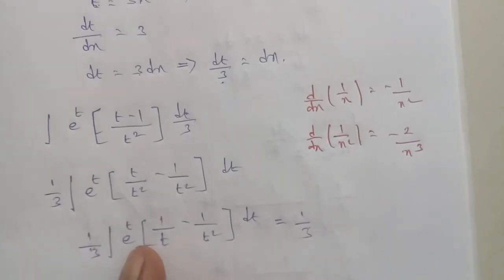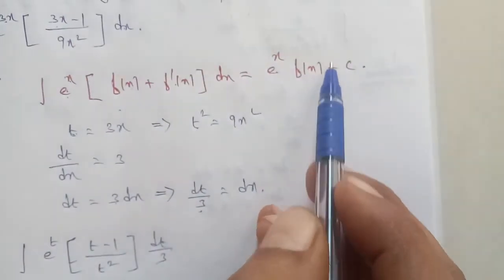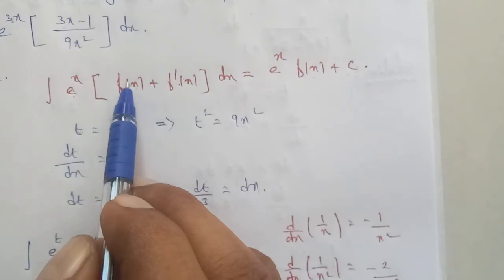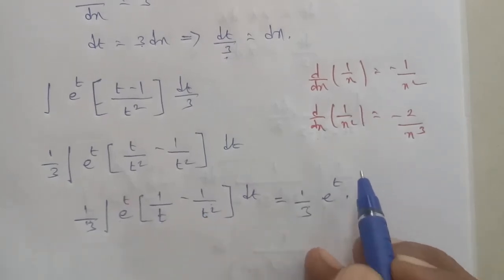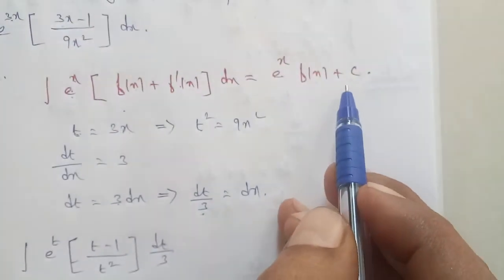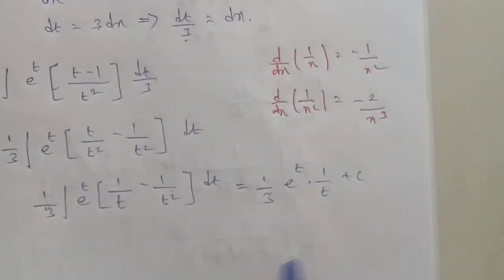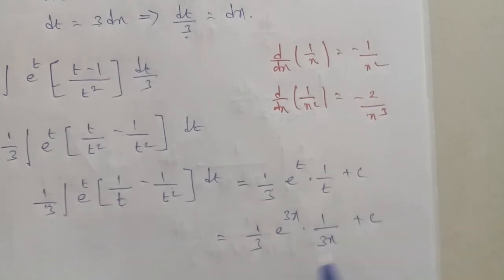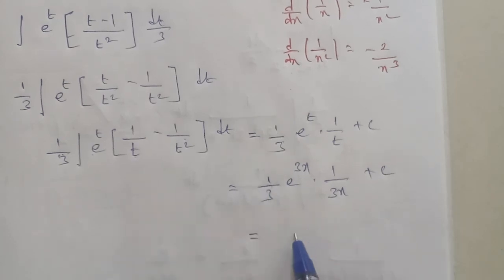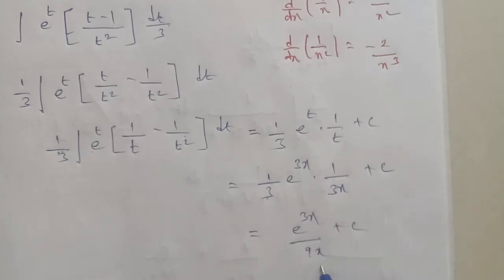So with the 1 by 3 factor outside, the result is 1 by 3 times e power t times 1 by t plus C. Now substituting back t equals 3x, the final answer is 1 by 3 times e power 3x times 1 by 3x plus C, which simplifies to e power 3x by 9x plus C.